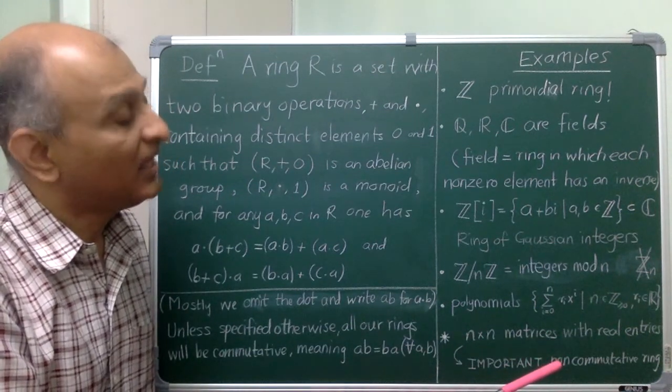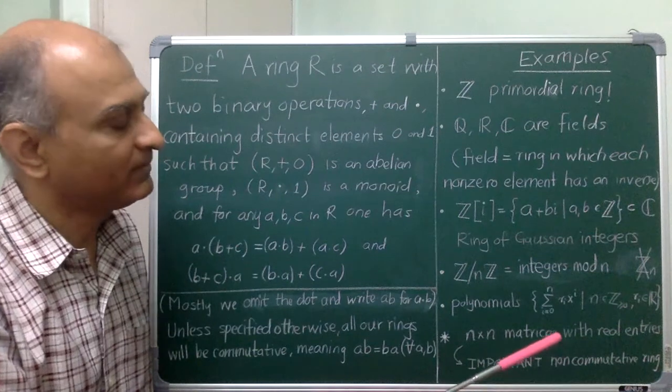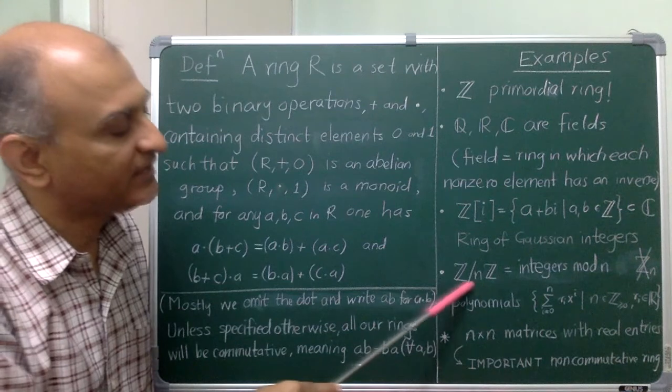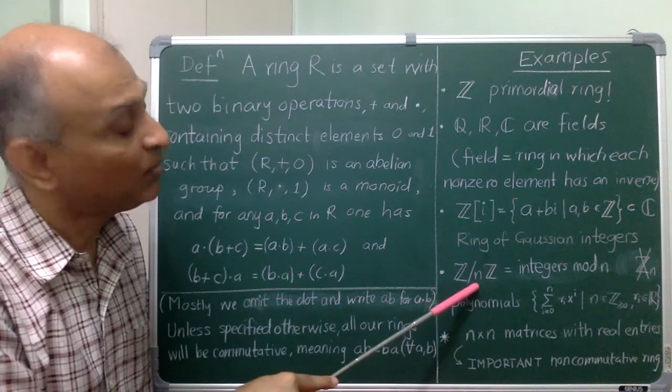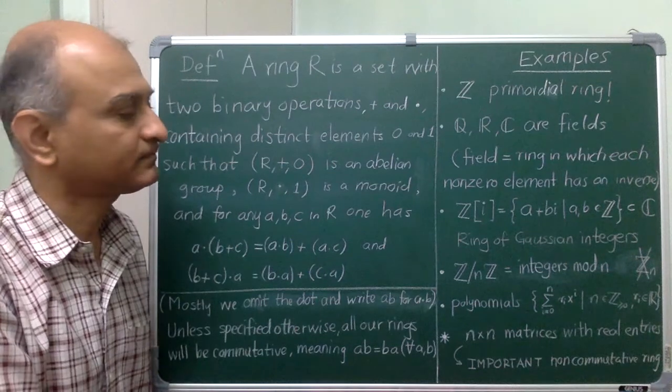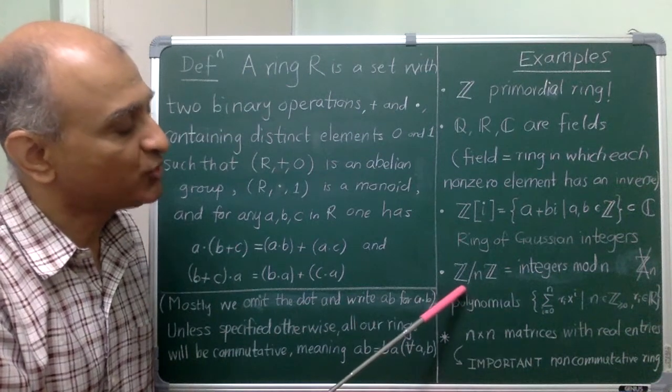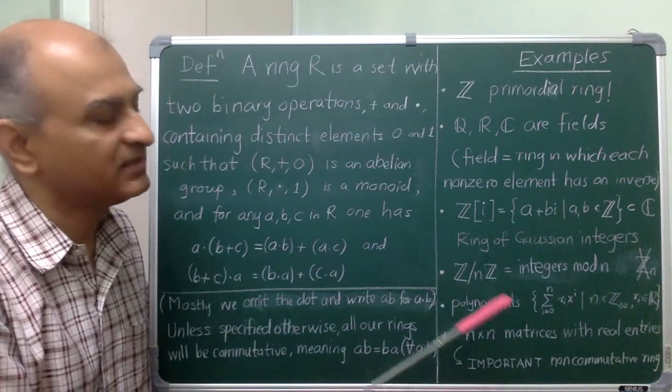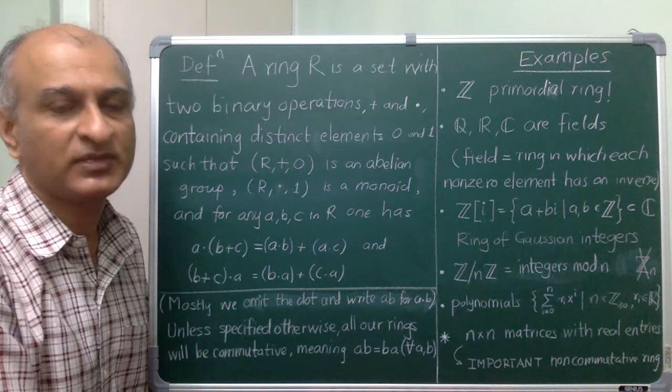A second thing that I would like you to check right now, please pause and check right now, is in fact a problem: for which values of n is Z mod nZ a field? In other words, when does it happen in such a world that every non-zero integer mod n has a multiplicative inverse? So, please do that right now. Okay, so what you should have found out was that Z mod nZ is a field precisely when n is a prime number.